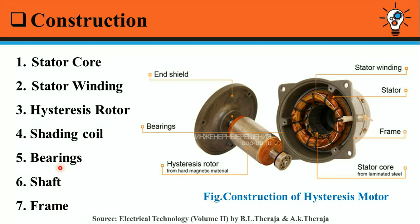Fifth is bearings — bearings are used to reduce friction. Sixth is the shaft — the shaft is used to transfer mechanical power. Seventh is the frame. This is the outermost part consisting of the frame; the frame is used to protect the inner parts of the motor.